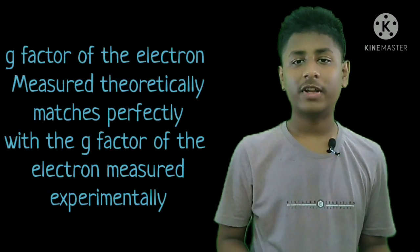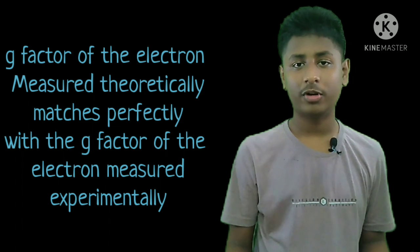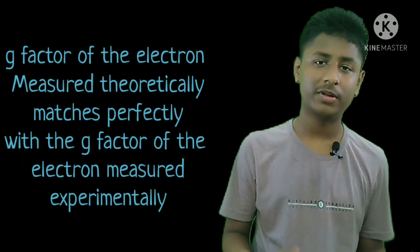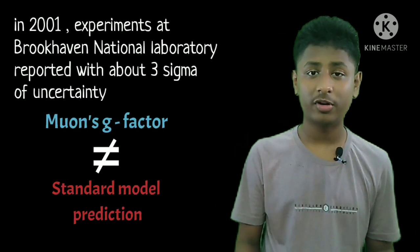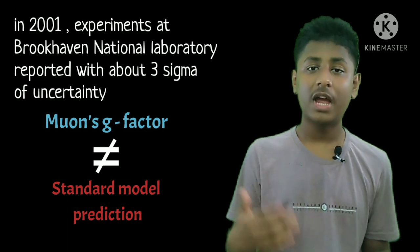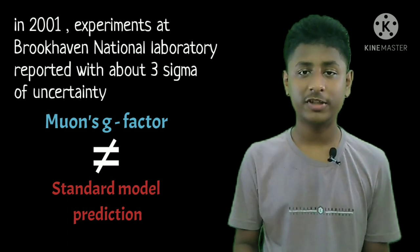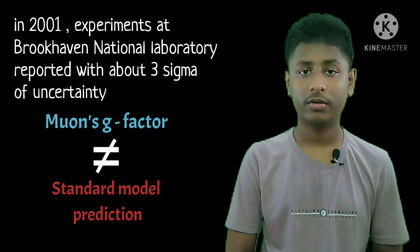The g-factor of the electron measured theoretically in the Standard Model matches perfectly with the g-factor of the electron measured experimentally. But this is not the case with the muon. In 2001, results announced by the Brookhaven National Laboratory reported differences between observed and predicted values of the g-factor of the muon.